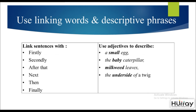Here are some examples of linking words and descriptive phrases. Since these are stages, using words like firstly, secondly, after that, next, then, and finally gives the reader clarity on what is happening and in what order. At the same time, using good adjectives to describe the image will enhance your lexical resource score. For example, writing 'a small egg' instead of just 'egg,' or 'baby caterpillar' instead of just 'caterpillar,' 'milkweed leaves,' or 'underside of a twig' — these are good words and phrases to increase your vocabulary score.